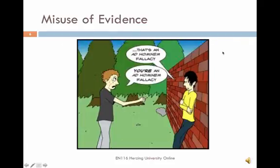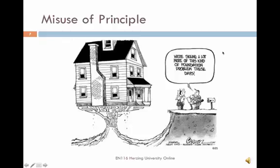Not only is it possible to misuse evidence, but it's also possible to misuse reasoning. If you're using reasoning from principle, there are two huge mistakes to watch out for: shaky principle, where you start an argument from a principle that is flawed or not supported; and omitted qualifiers, where you claim that something always or never happens, when the truth is probably somewhere in the middle.